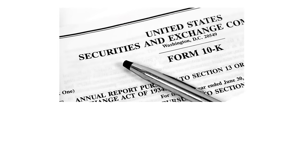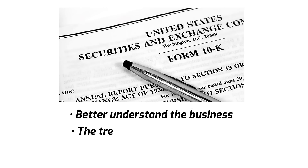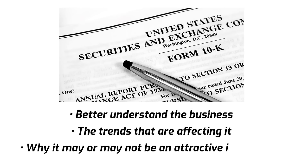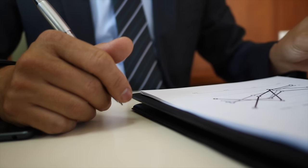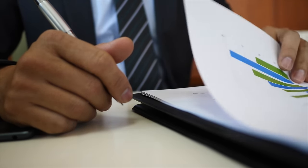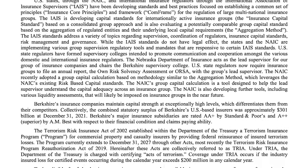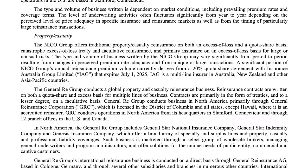For those of you who may not be as familiar, an annual report, also referred to as a 10K, provides information about the operations of a company. The reason why an annual report is so helpful is because it helps you better understand a business, the trends that are affecting it, and why it may or may not be an attractive investment. I like 10Ks because even if I know nothing about a company, I can pick an annual report up, read through it, and then have a pretty good understanding of that company. Annual reports can run into the hundreds of pages for large, complex companies — don't be intimidated, because I will let you know what you should be focusing on and what you can skip over.